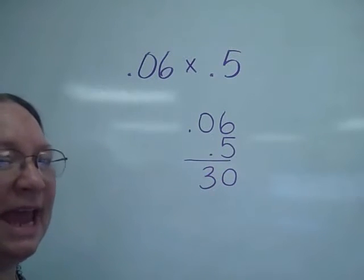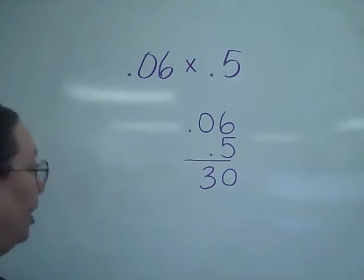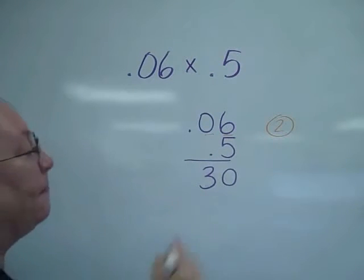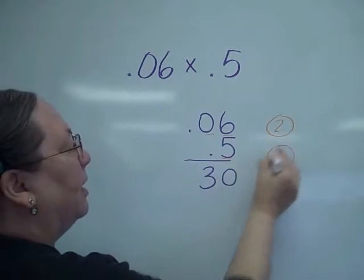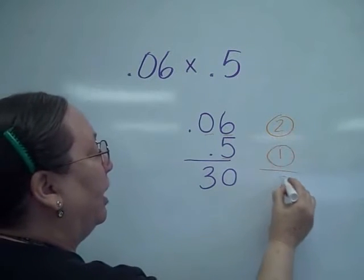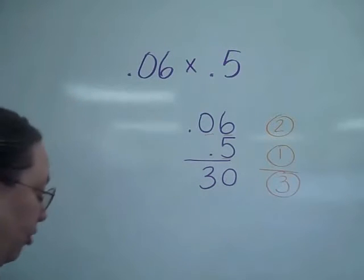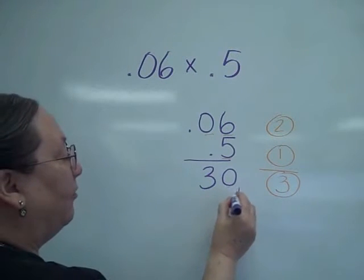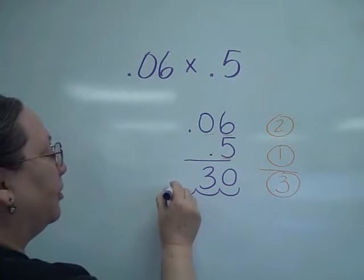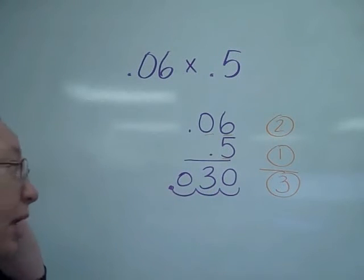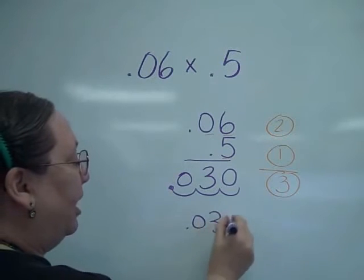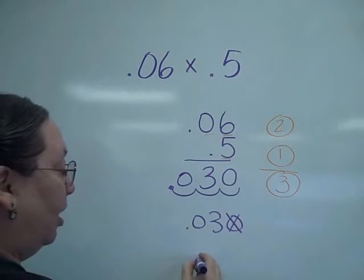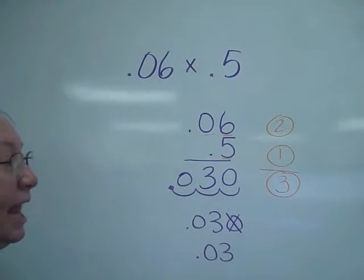But now I have to account for the decimal points. Noticing right here, I have two numbers behind the decimal there. Here I have one number behind the decimal. When I add up the 2 and the 1, I get three digits behind the decimal. That means in my answer I'm going to have to have one, two, three numbers behind the decimal also. I have 30 thousandths, and I can always take off the zero on the end, which would leave me 3 hundredths for my answer.